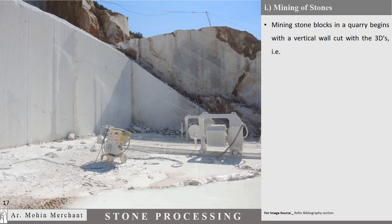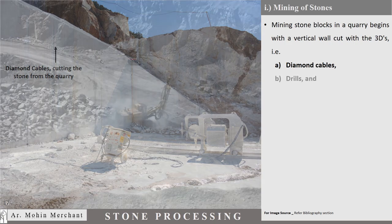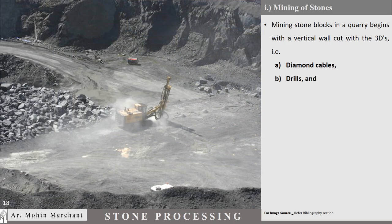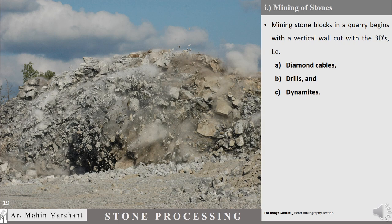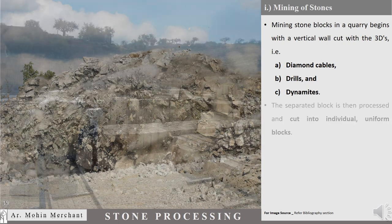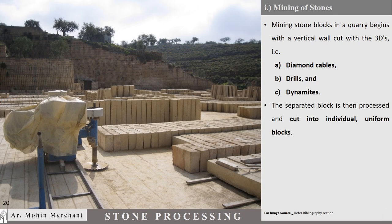Mining stone blocks in a quarry begins with a vertical wall cut with the 3Ds — that is, diamond cables, drills, and dynamites. The separated block is then processed and cut into individual, uniform blocks.